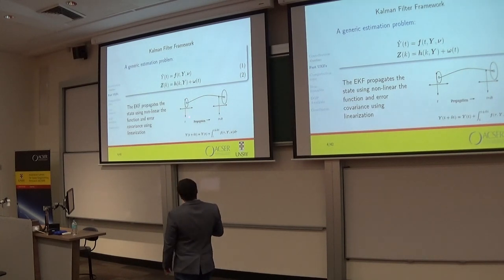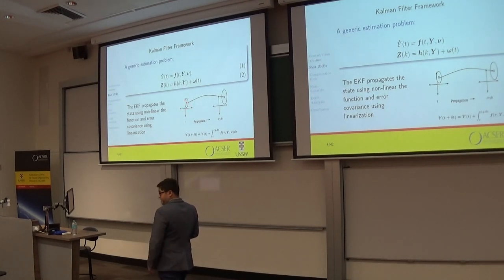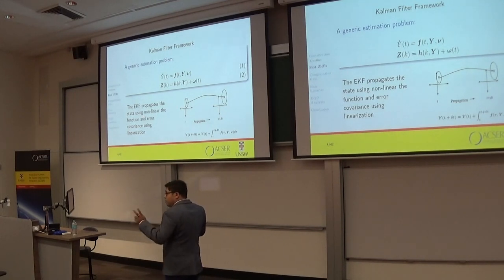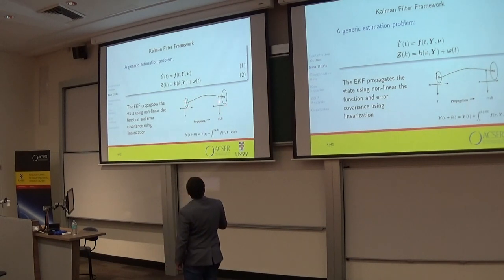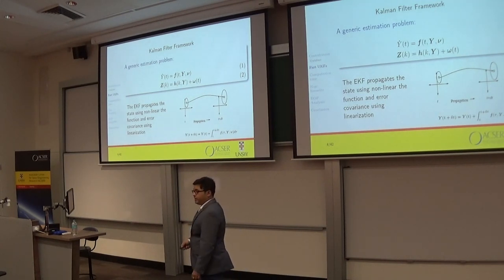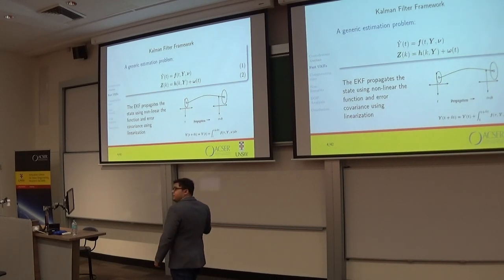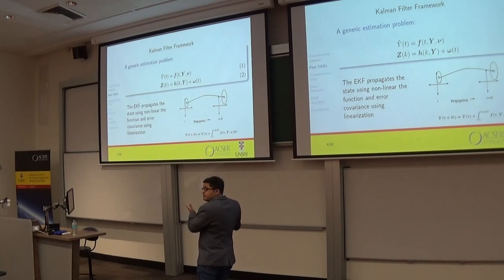What EKF does is: in a two-dimensional state space, our initial mean state vector is a point and the ellipse represents the uncertainty. EKF has two stages: prediction and update. In the prediction stage, it takes this point and propagates it by integrating the differential equation — this is done in a nonlinear way. But the uncertainty is propagated in a linear fashion, so the ellipse just increases in size without changing shape, retaining its elliptical property due to the linear propagation.